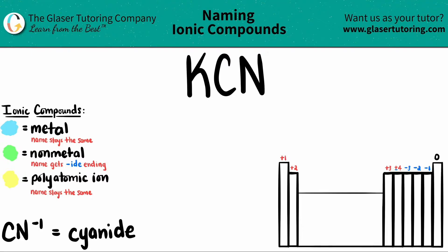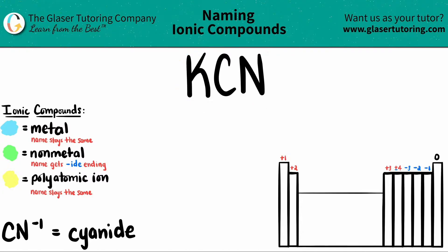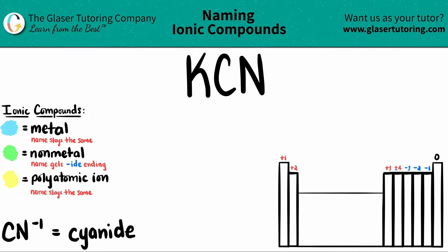Today we are going to be finding the name of the ionic compound KCN. Now just keep in mind that if you have an ionic compound that has three or more different elements in it, like we have here, you know that you have at least one polyatomic ion. Here we have K, which is potassium, C for carbon, and N for nitrogen. So I know that I have a polyatomic ion.